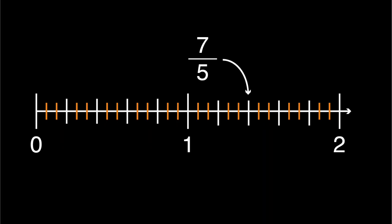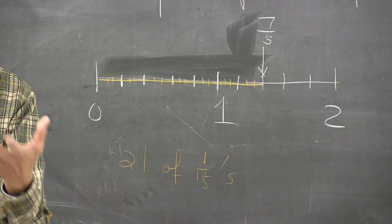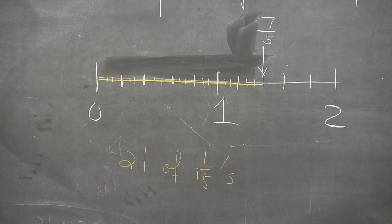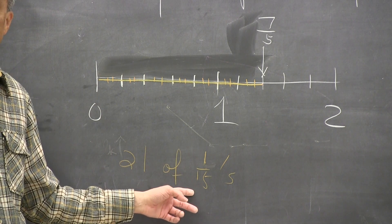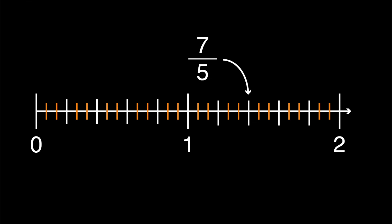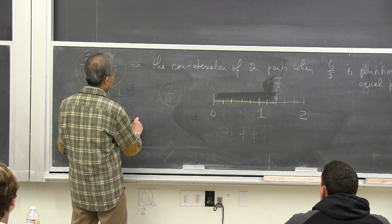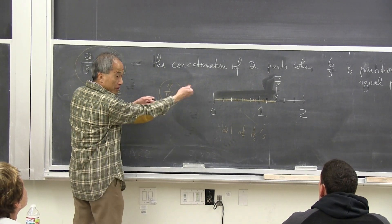Of course, you now have 21 of those pieces. You have 21 marbles and you want to divide into 3 equal parts — how many do you get? Seven. So now seven — except it's not marbles — seven of the fifteenths. So one part is 7 fifteenths. But do you take one part or two? Two. So it's 14 fifteenths.